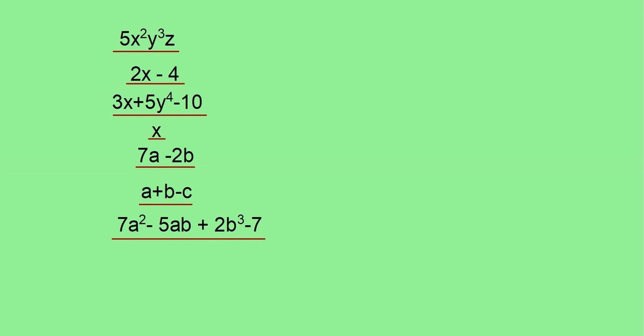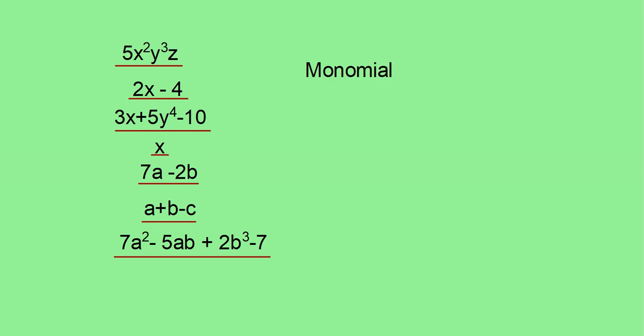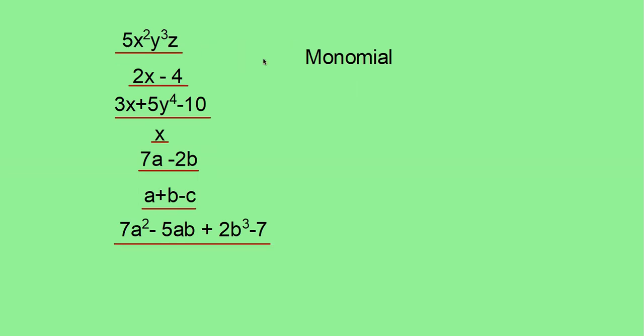Now, if an expression contains only one term, it is called monomial. Now, what are the monomials here? You have 5x square y cube z and x are monomials.